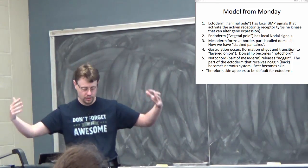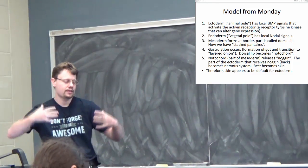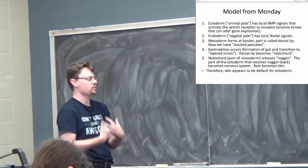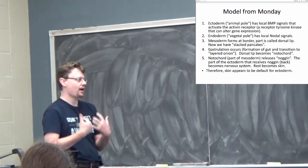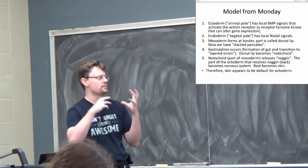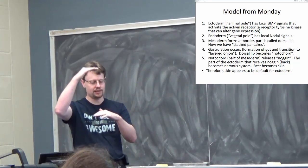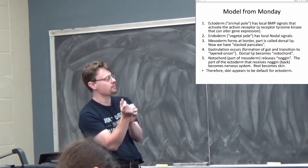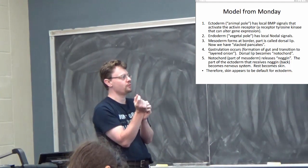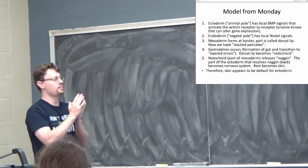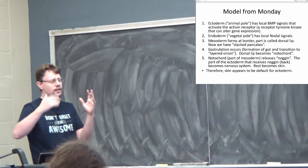Then gastrulation occurs. The endoderm gets sucked in. We get this little cavity forming, and that's going to be the digestive system. That point where everything sucks in is the back end of the digestive system eventually. And so now we go from stacked pancakes to layered onion structure, and there's this segment of the mesoderm. It was called the dorsal lip before, now it's called the notochord.